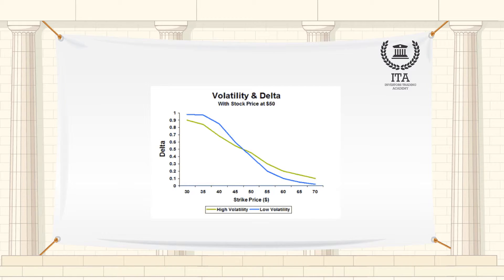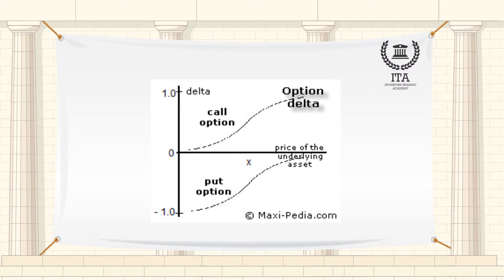The value of delta ranges from minus 100 to 0 for puts and 0 to 100 for calls. The delta has been multiplied by 100 to shift the decimal. Puts have a negative delta because they have what is called a negative relationship to the underlying. Put premiums fall when the underlying rises, and vice versa.